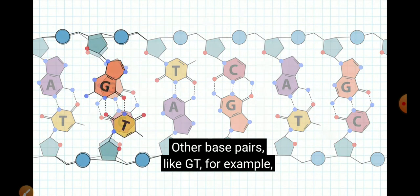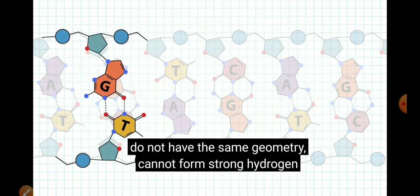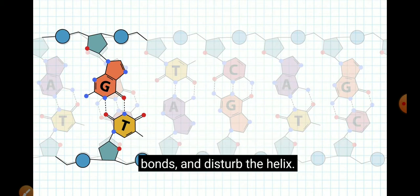Other base pairs, like GT for example, do not have the same geometry, cannot form strong hydrogen bonds, and disturb the helix.